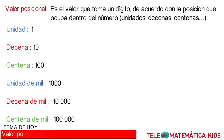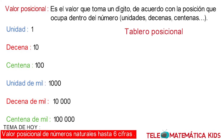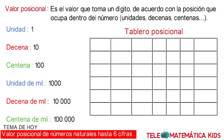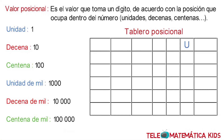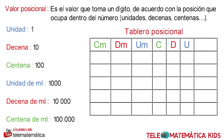Ahora bien, a continuación, veamos algunos ejemplos en el tablero posicional, donde comenzaremos identificando la columna de las unidades, la columna de las decenas, la columna de las centenas, la columna de las unidades de mil, la columna de las decenas de mil, y la columna de las centenas de mil. Y en la última columna, escribiremos el número.